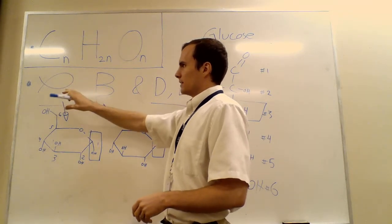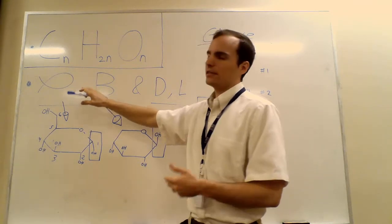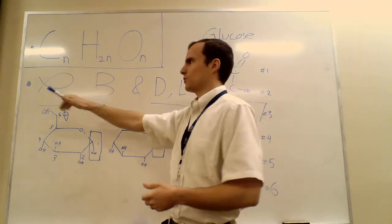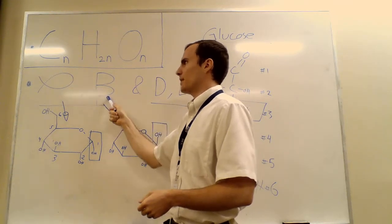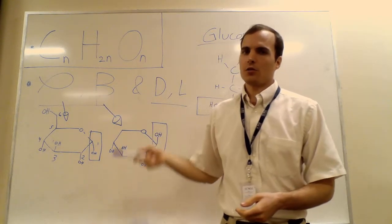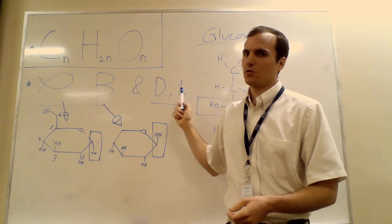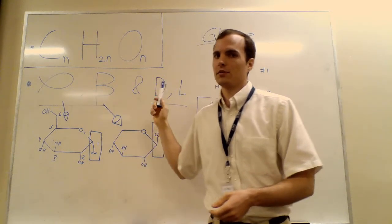So each sugar has, at least lots of the common sugars have alpha and beta forms. They also have dextro and levo forms. We're going to start with alpha and beta, then we'll move on to dextro and levo.